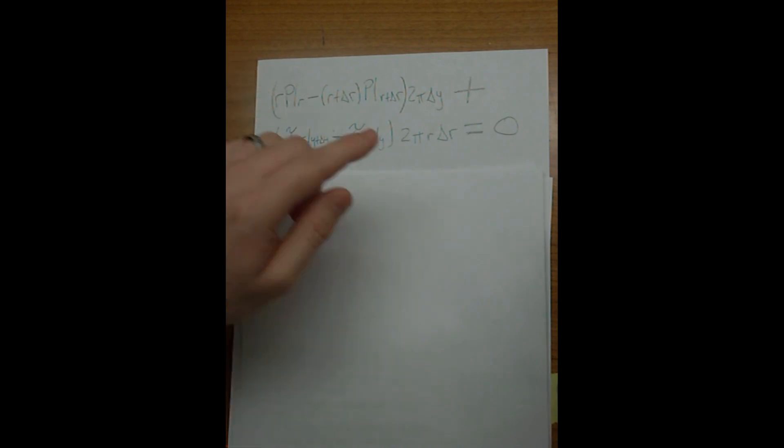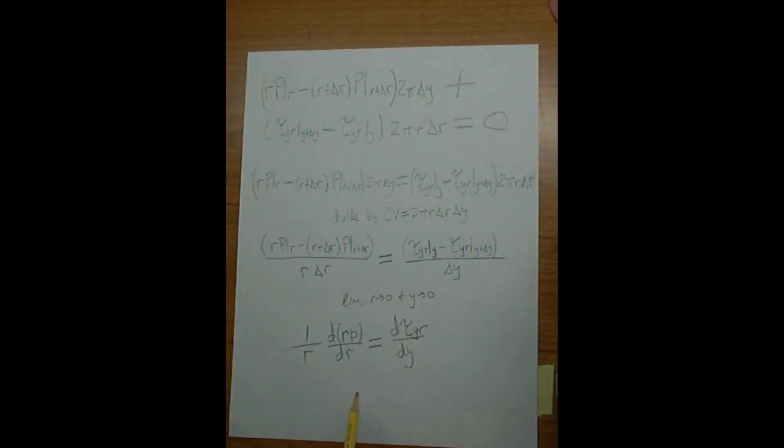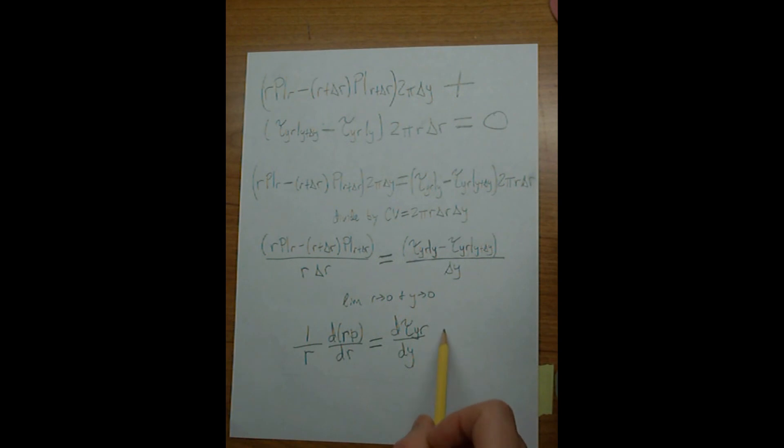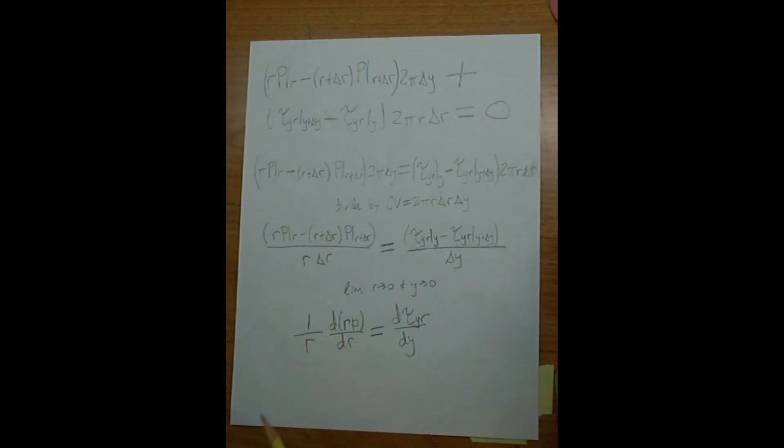Therefore, our momentum balance reduces to: the sum of forces equals zero. We rearrange, move the shear stress to the other side, and divide by our control volume, which is 2 pi r delta r delta y. Taking our limits, we get the governing equation for steady laminar flow moving through the two discs.